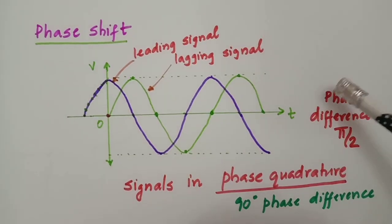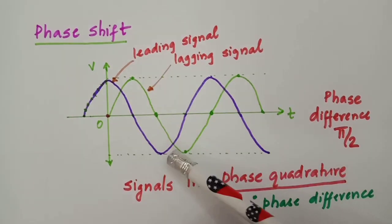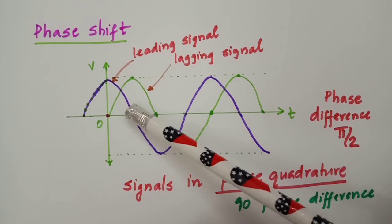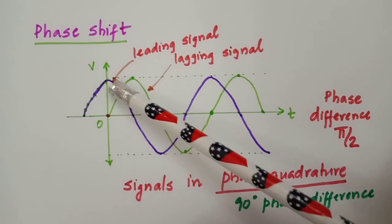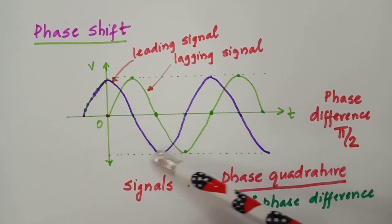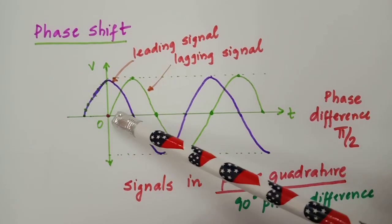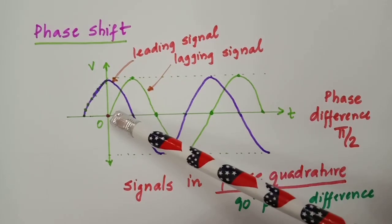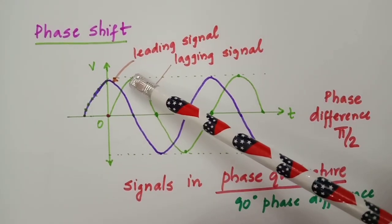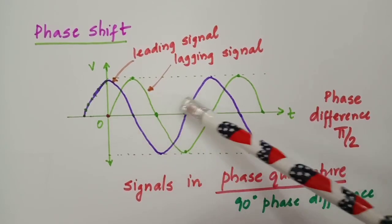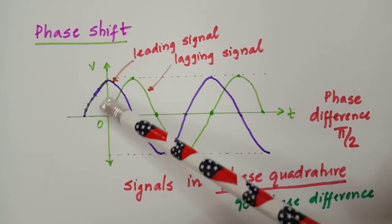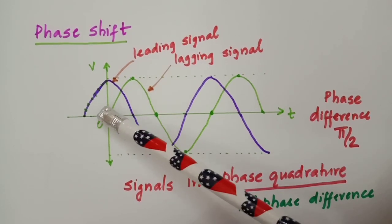Before going into our topic, we shall define what is meant by phase shift. We have considered two signals here, shown in two colors. These are two similar signals of same frequency and same amplitude. You find that the signal in green is lagging the signal in blue by a particular angle — here it is lagging by 90 degrees. So the green signal is lagging the signal shown in blue color, or the signal shown in blue is leading the signal shown in green color.